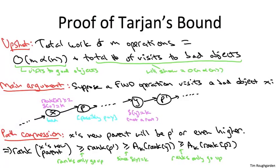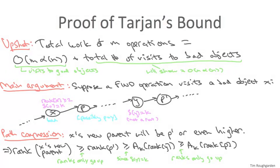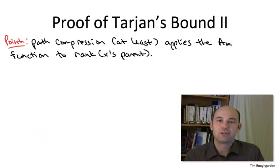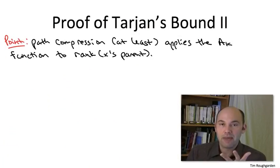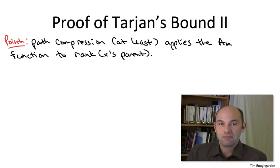Focusing on the leftmost and rightmost quantities in this chain of inequalities: when you apply path compression to X, it acquires a new parent, and the rank of that new parent is at least the A_K function applied to the rank of its old parent. Path compression at the very least applies the A_K function to the rank of X's parent. Now suppose you visit some bad object X — not just once, but the same object X while it's bad over and over again. Every such visit to X while it's bad applies the function A_K to the rank of its parent.